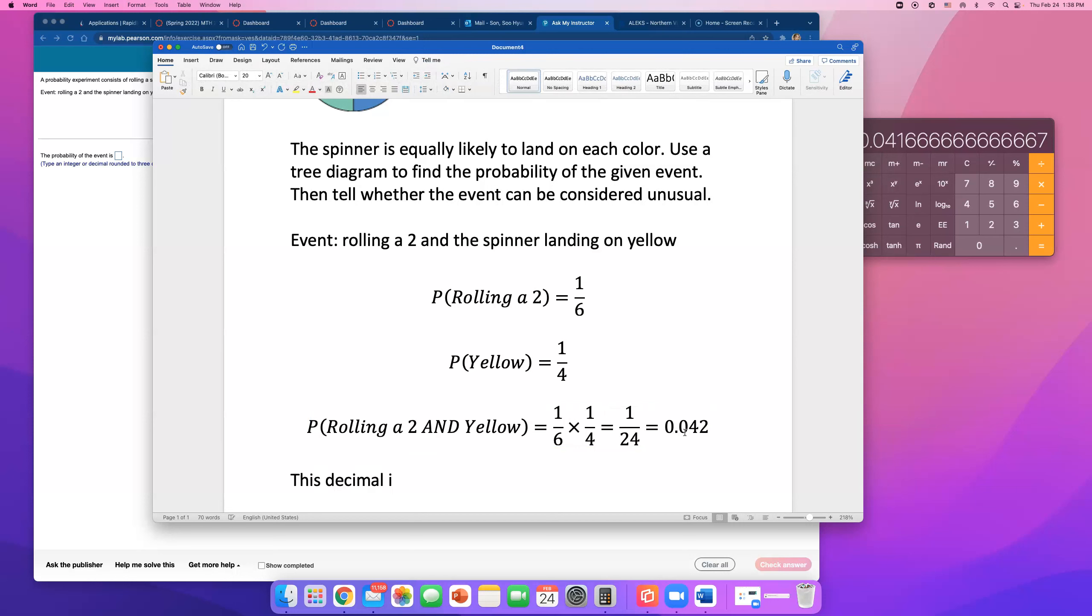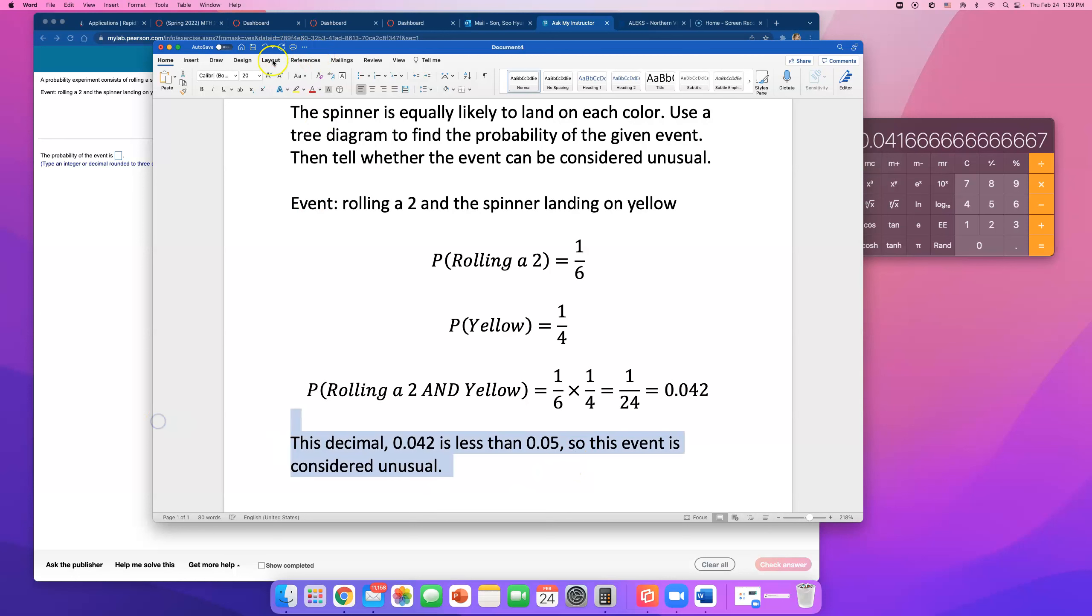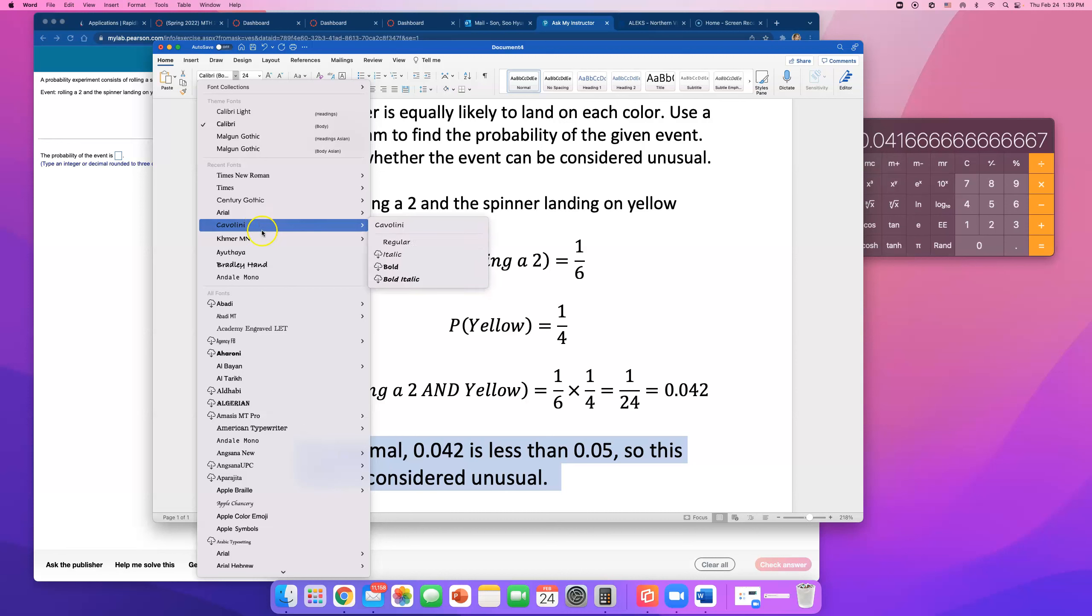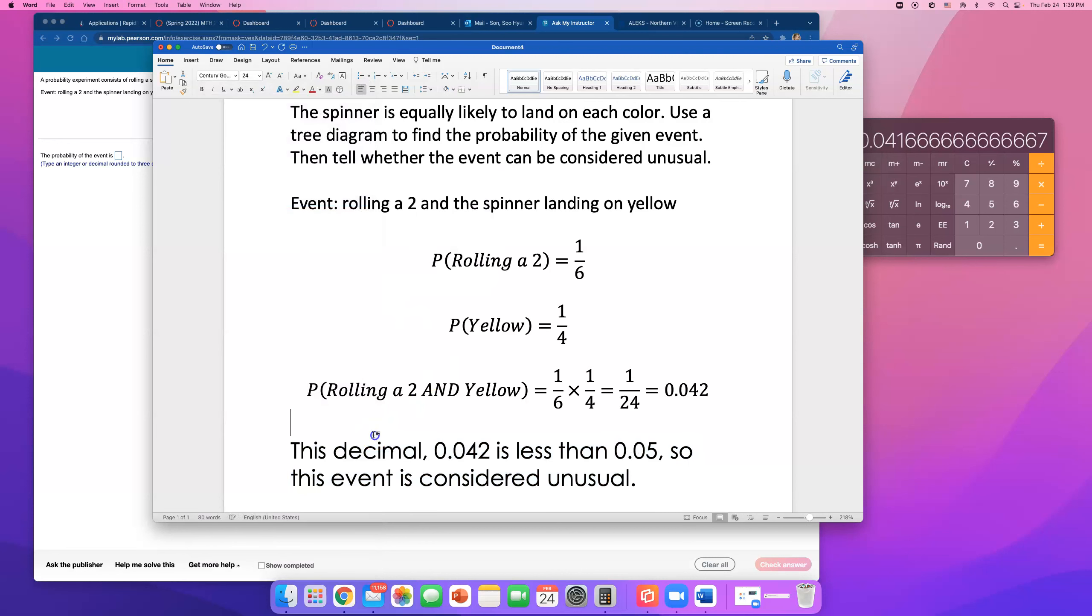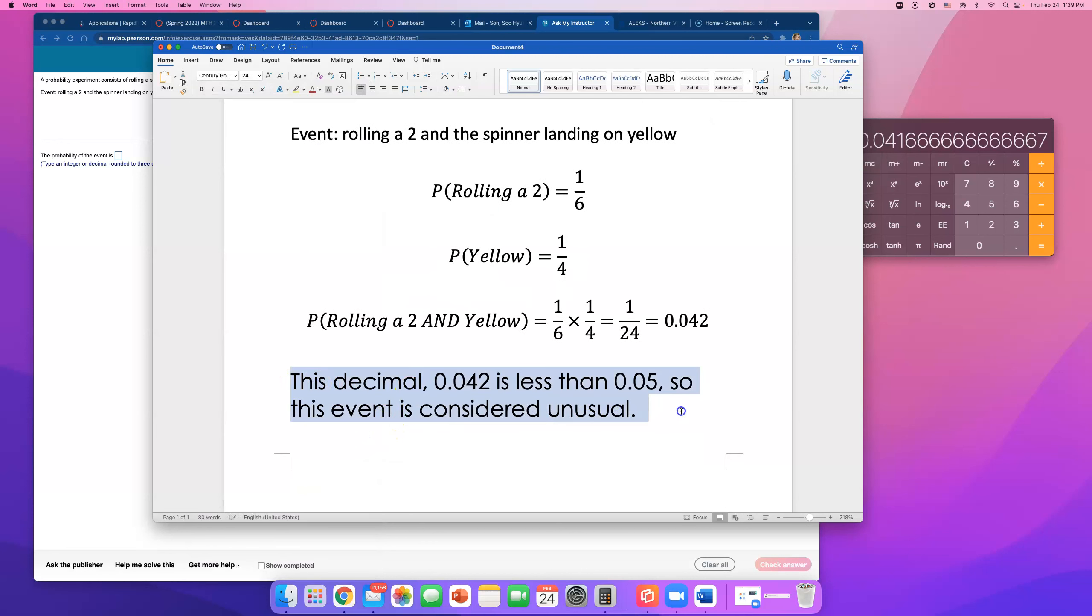Now notice this decimal, 0.042, is less than 0.05, so this event is considered unusual. Anytime a probability of something happening comes out to be less than 5%, you can say that the probability of that event happening is not likely. It's an unusual thing for this to happen.